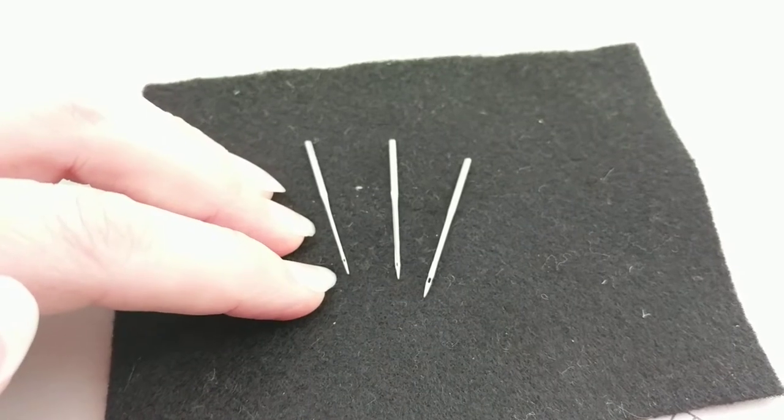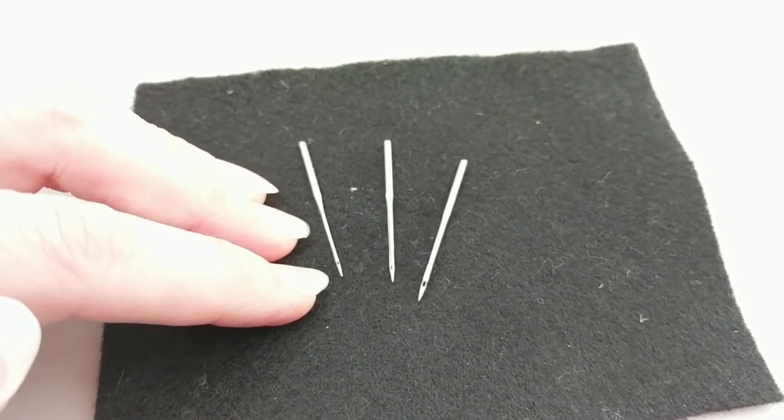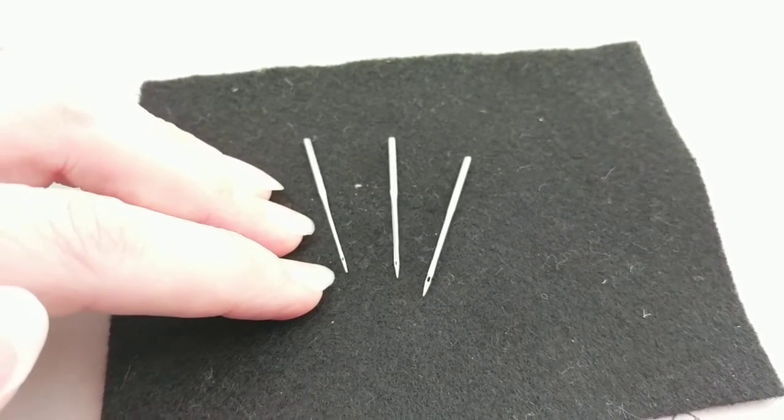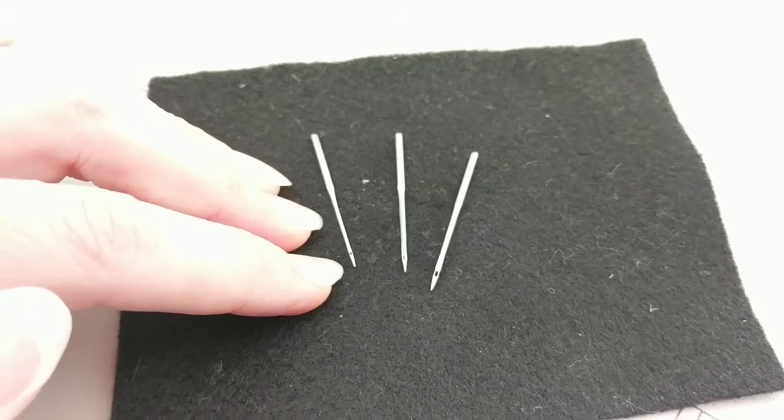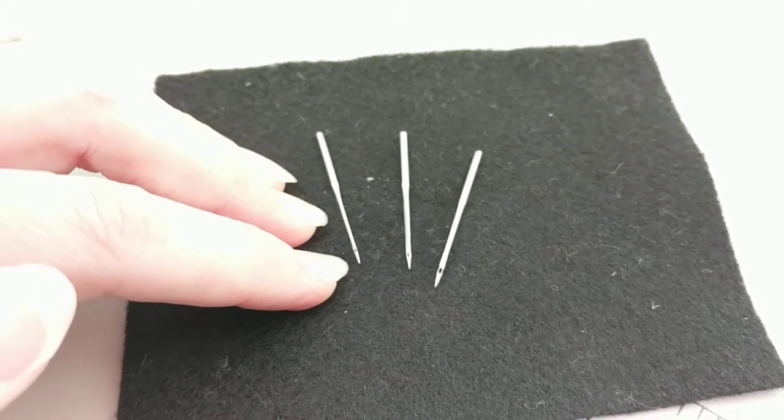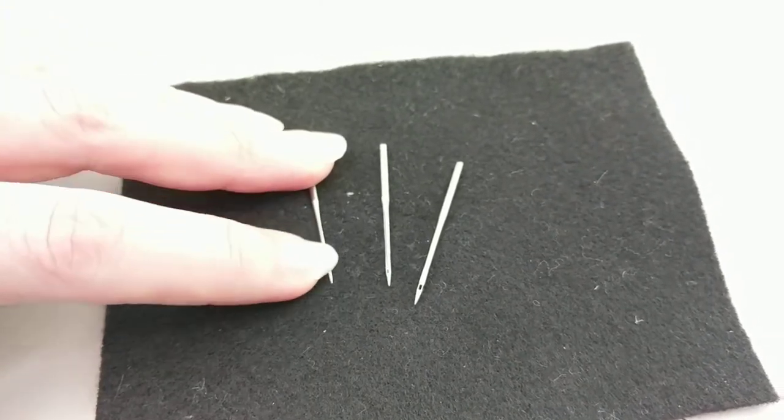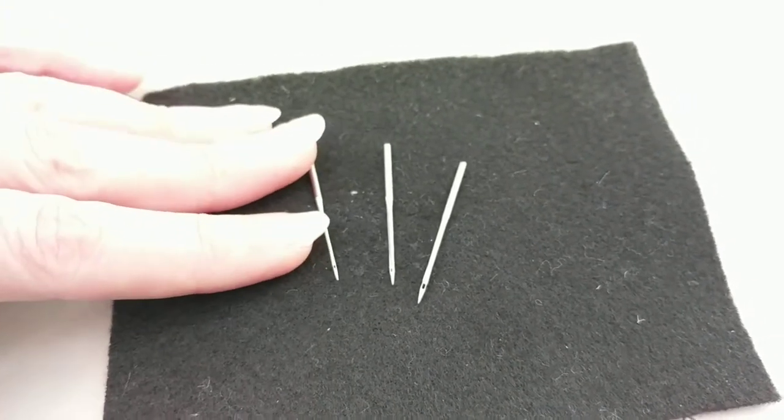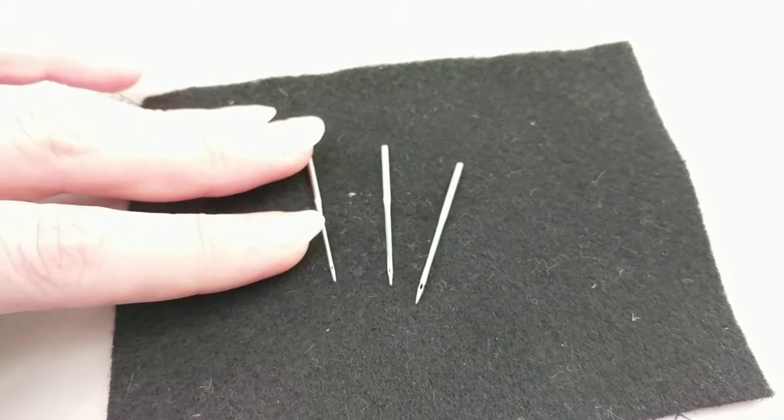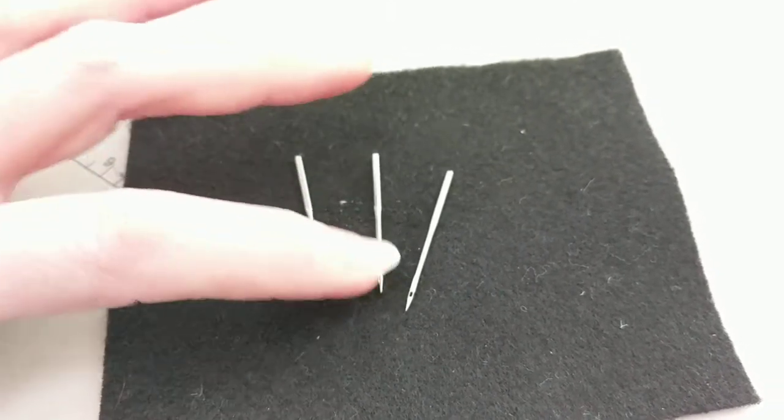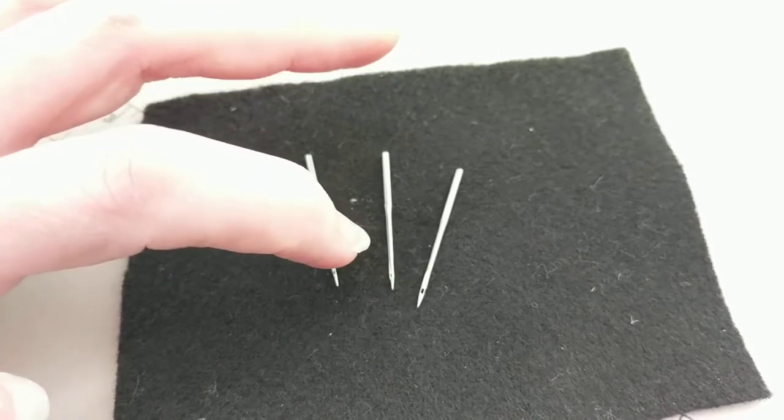Most often, I'll use the 9 ballpoint when I'm sewing silks or satins that I don't want to pick or pull. Also, if what I'm sewing is a little bit bumpy and I need a needle that is flexible, because the shank is so much thinner, this needle can actually bend a few more times before breaking as opposed to these. These are a little bit more brittle.